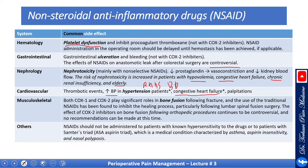Both COX-1 and COX-2 play a significant role in bone fusion following fracture, and the use of traditional NSAIDs has been found to inhibit the healing process, particularly following lumbar spine fusion surgery. The effect of COX-2 inhibitors on bone fusion following orthopedic procedures continues to be controversial — consider case by case and discuss with the surgeon. NSAIDs should not be administered to patients with known hypersensitivity or to patients with Samter's triad, characterized by aspirin sensitivity, asthma, and nasal polyposis.